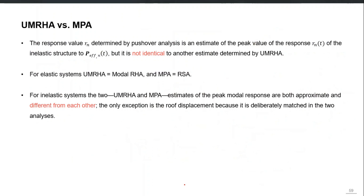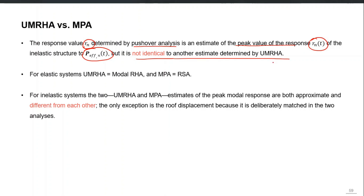UMRHA and MPA can be compared as follows: the response value R_n for any nth mode, determined by pushover analysis in the MPA procedure, is the estimate of the peak value of the time history of that particular response against the effective earthquake forces of that mode. However, it is not identical to the estimate determined by UMRHA, since UMRHA and MPA are based on different assumptions.